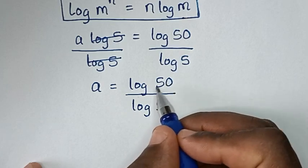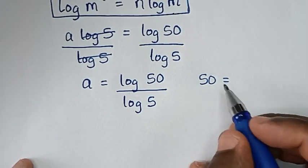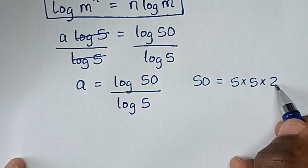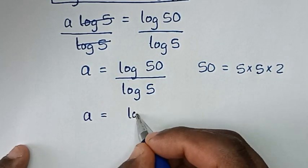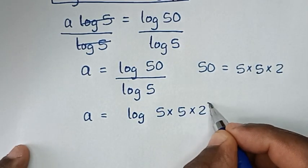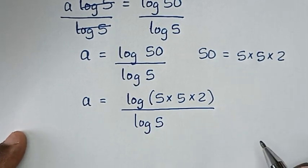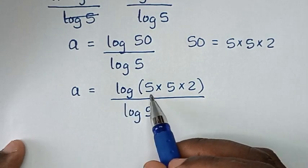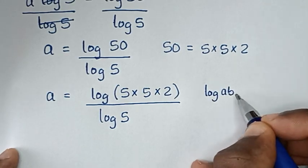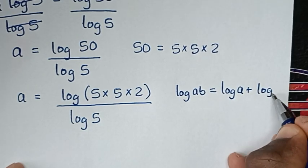From here, log of 50: 50 is the same as 5 times 5 times 2, since 5 times 5 is 25 and 25 times 2 is 50. So a is equal to log of 5 times 5 times 2, all over log of 5. This part is in the form of log of a times b, which equals log of a plus log of b.